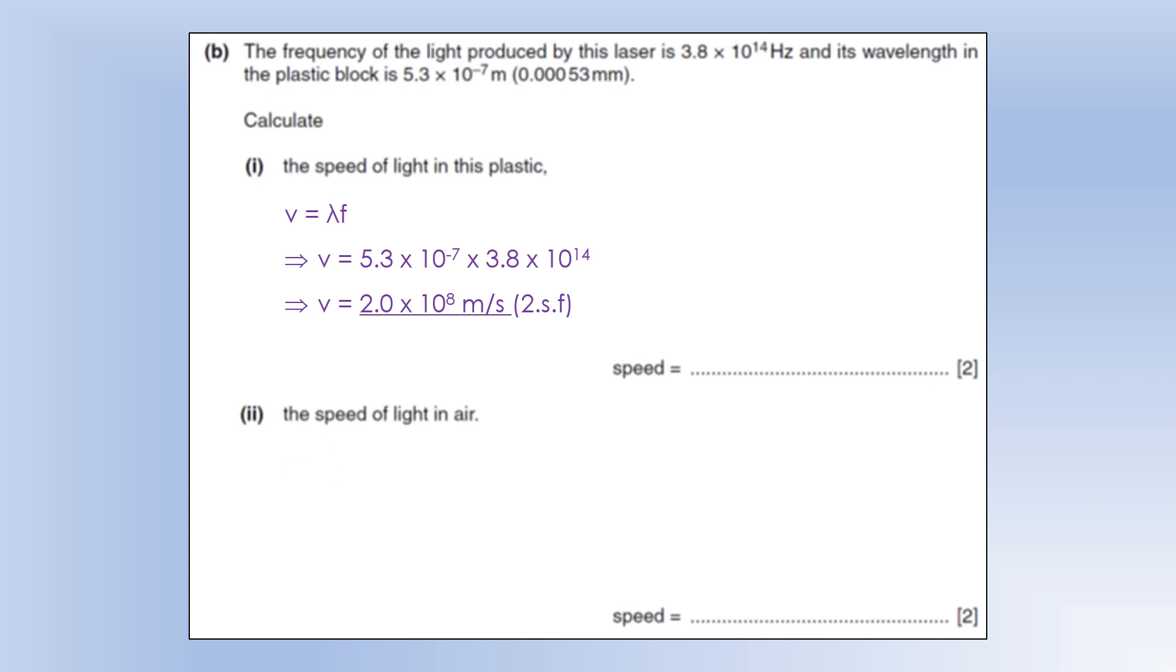If we want the speed of light in air, we know the refractive index, so we can actually calculate what the speed is. And it's going to be 3 times 10 to the 8, because it travels about the same speed in air as it does in a vacuum. So that kind of works.